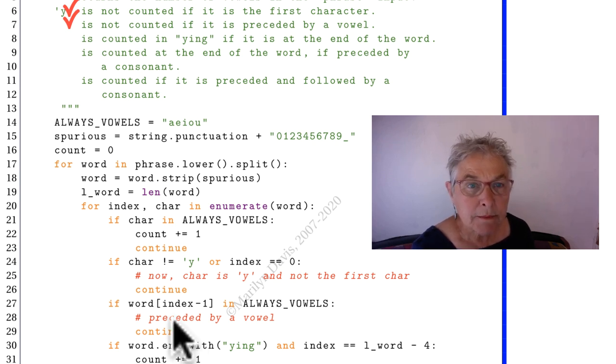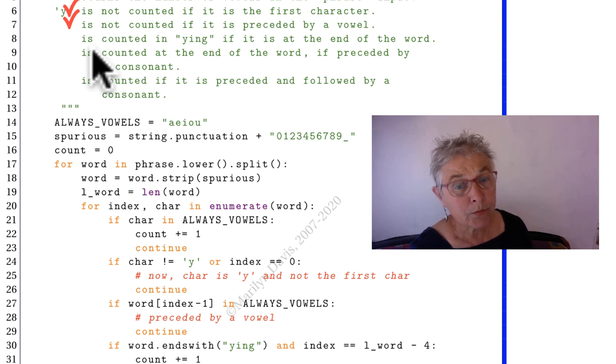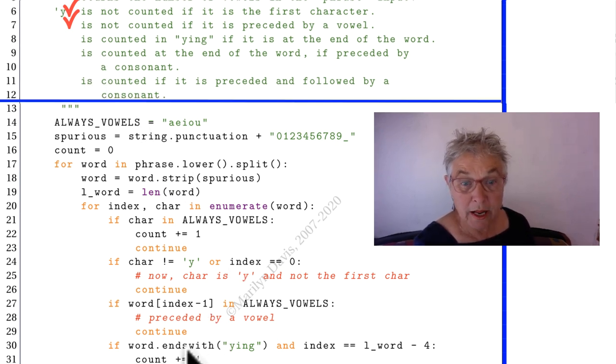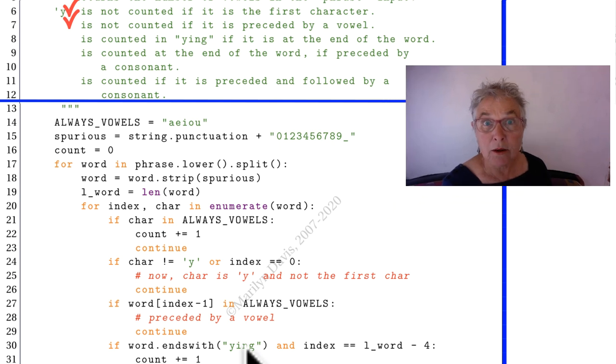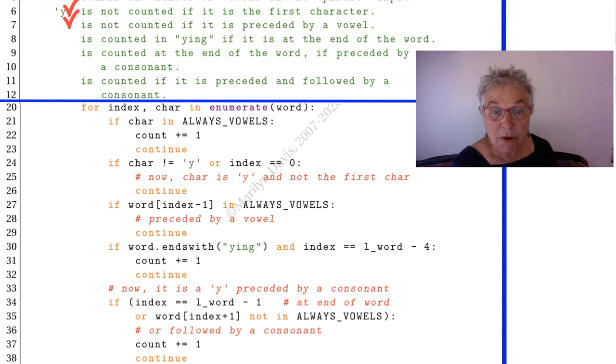Then we see that it is counted if it's in yin, and that yin is at the end of the word. So let's see. If the word ends with yin, then maybe so. But only if that y is at the index, the length of the word minus four. Then we're looking at the y that's at the end with the yin. And yes, we count it. And we go get the next character.